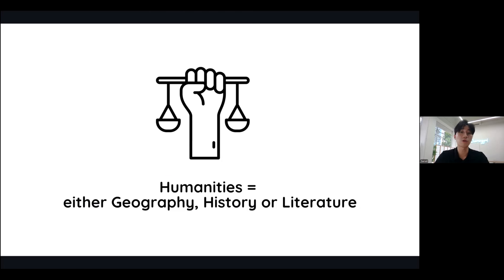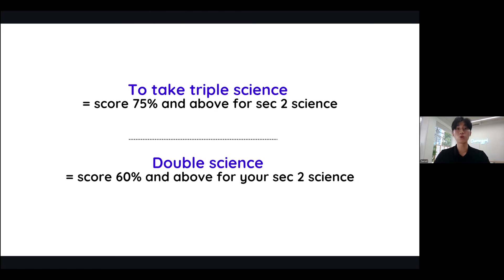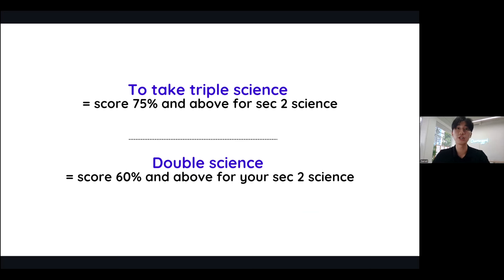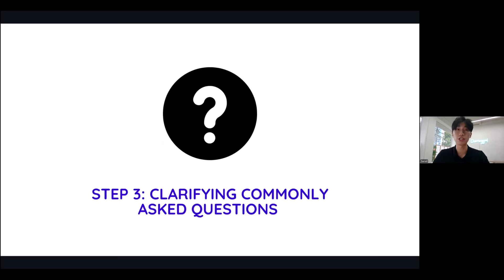Now, typically to take triple science, you will need to score at least 75% and above at your Sec 2 science. Double science will require you to score typically 60% and above. Let me now mention the three most important considerations when it comes to your subject combination as you go from Sec 2 to Sec 3.